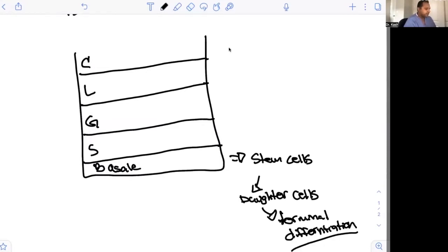The next layer is called the spinosum layer. This layer is the largest layer. This is where health and strength comes into play. This is where keratin starts to deposit.